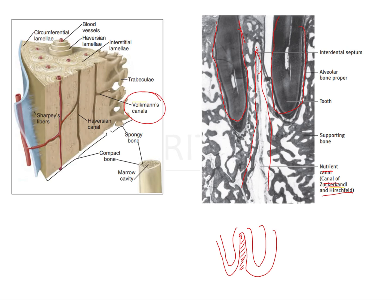Volkmann's canals are canals present between the Haversian canals. Compact bone consists of concentric lamellae, where each Haversian canal has a central blood vessel around which bone deposits in concentric circles. The canal running through the center of the lamellae is the Haversian canal. A canal that interconnects two Haversian systems is known as a Volkmann's canal.